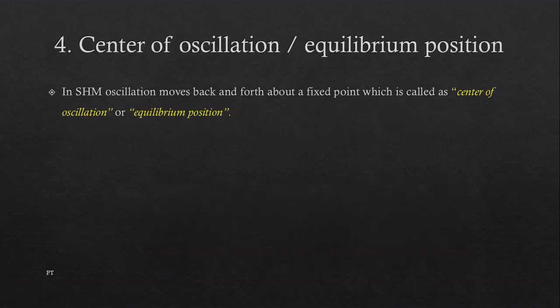Center of oscillation or equilibrium position: in simple harmonic motion, oscillations move back and forth about a fixed point which is called center of oscillation or the equilibrium position.